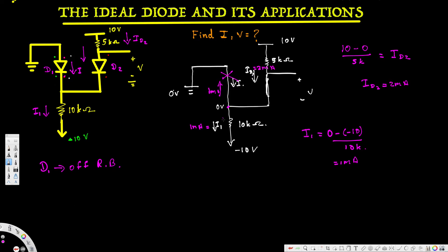Since diode 1 is off, we replace it with an open circuit. With this open circuit, i is equal to zero — that's the answer to one part of the question. However, since we changed our assumption, we now have to recalculate everything using the open circuit for diode 1.